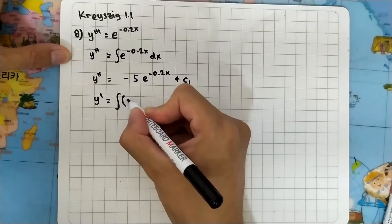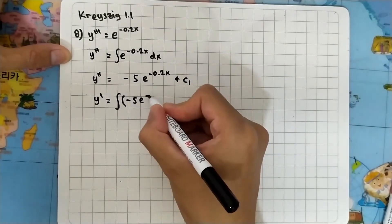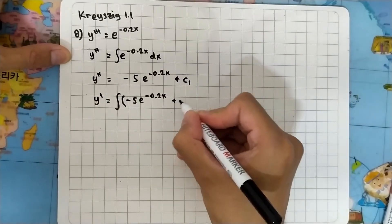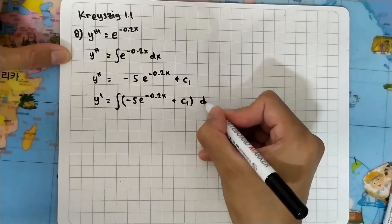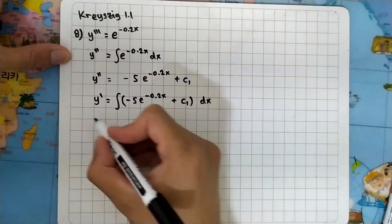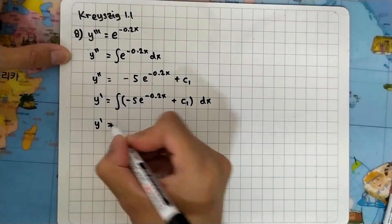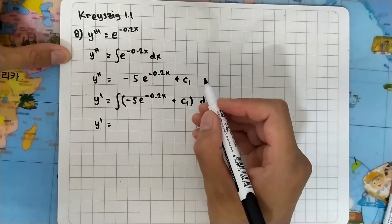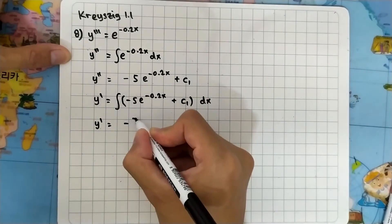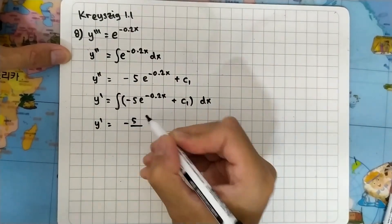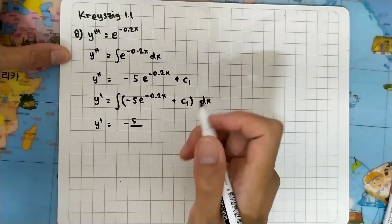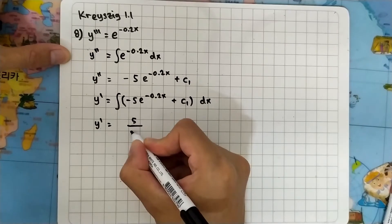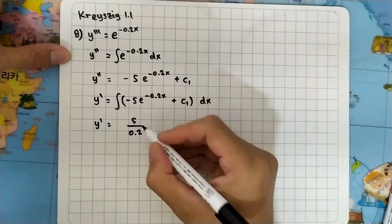And that will make this one... okay, we have to be very careful here. So it is minus 5 divided by minus 0.2, and it is positive. So 0.2 and it is e to the minus 0.2x.